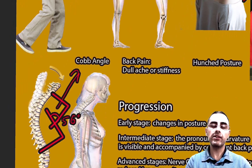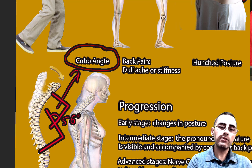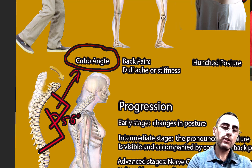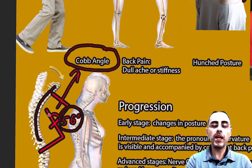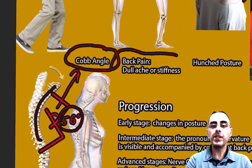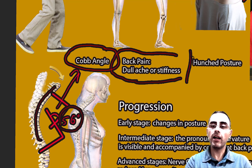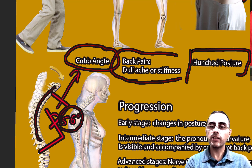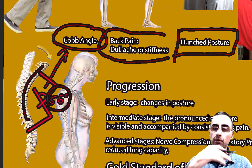There are three main characteristics of kyphosis. First is Cobb's angle — a curvature angle of the spine greater than 50 degrees, which allows a diagnosis of kyphosis. Second is back pain, which is a dull ache or stiffness of the back; fatigue is also common. Third is hunched posture, which is observed by many people including parents and peers.